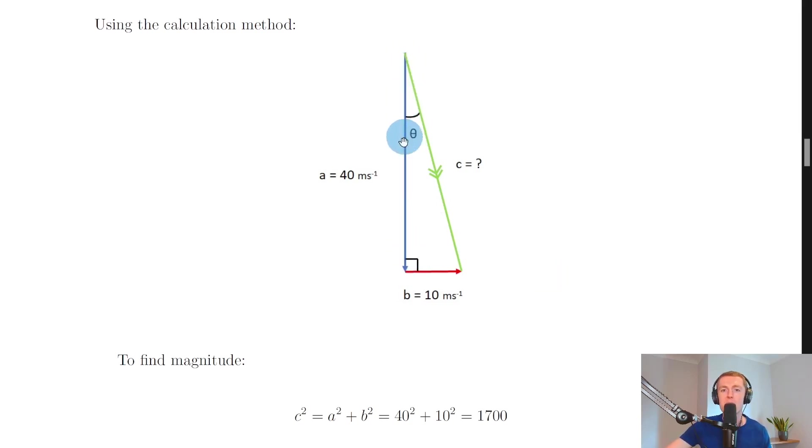So we have our vector of 40 meters per second going south that's our velocity vector and I've labeled this a and then we have our velocity vector for the wind which is 10 meters per second east and we've labeled this vector as b and you'll notice they've been joined nose to tail to create this right angle triangle.